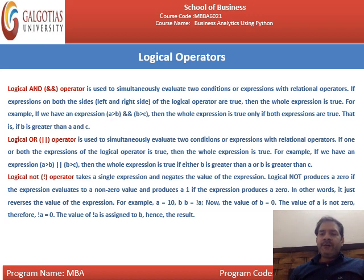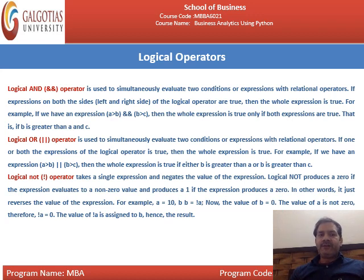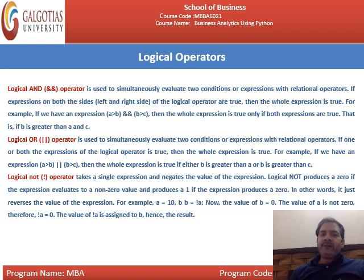If you remember, you can associate these with the bitwise operators. In the previous lecture, we discussed bitwise OR, bitwise AND, bitwise NOT, and bitwise XOR. The truth table we discussed in that lecture is the same as for logical operators. For logical AND, you write a double AND operator (&&). But for bitwise operators, you simply write a single AND (&), a simple OR, and a simple XOR operator.